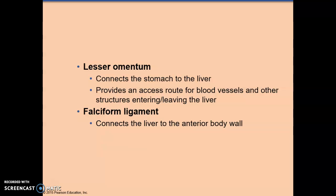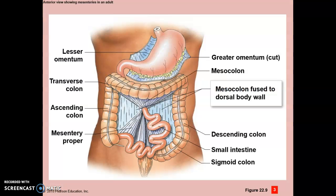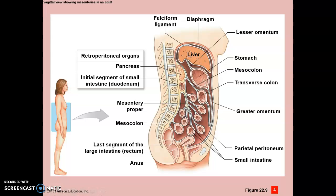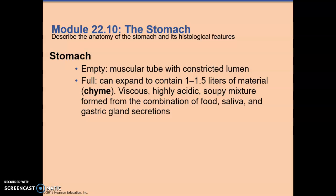There are blood vessels between the two layers of mesentery. The falciform ligament connects the liver to the anterior body wall. The greater omentum is attached to the greater curvature of the stomach; the lesser omentum is connected to the lesser curvature of the stomach. The retroperitoneal organs include the pancreas, the duodenum, and the kidneys.